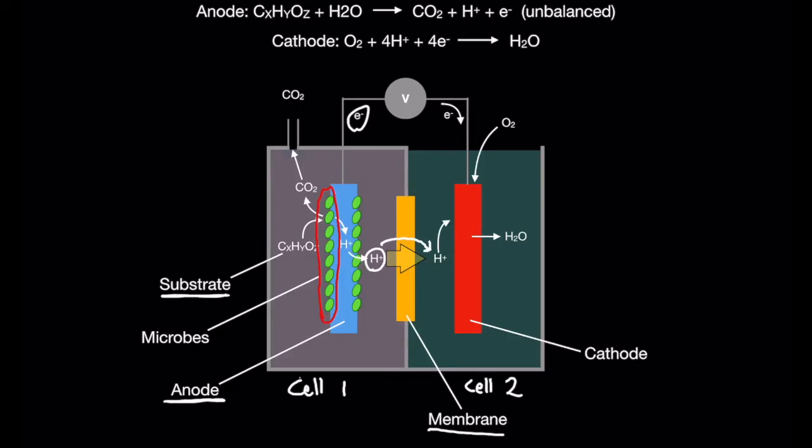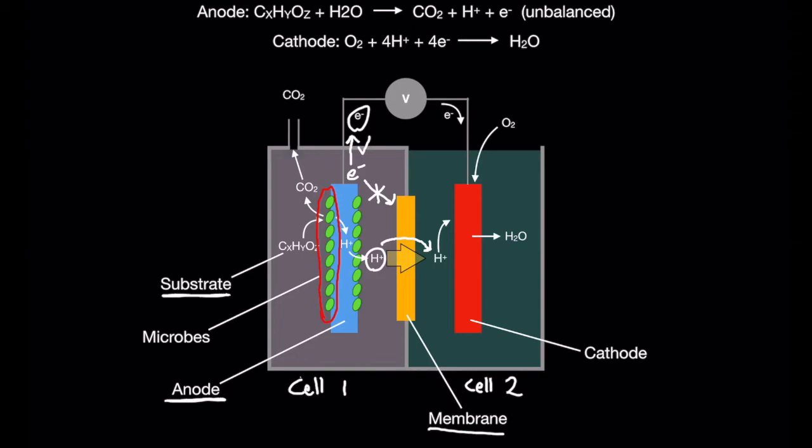The electrons are unable to migrate through the water and must travel through the electrode and into a wire connecting them to an electric load such as a light bulb. The overall reaction for the anode is shown above.